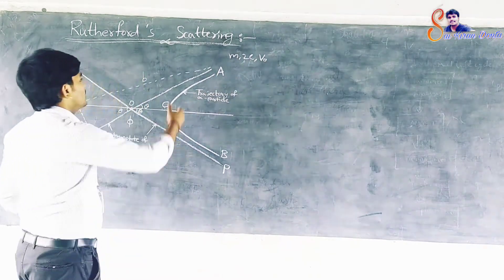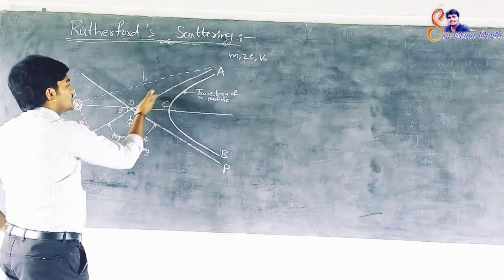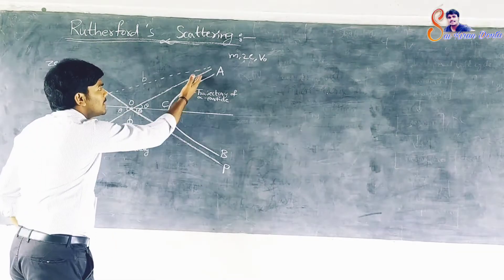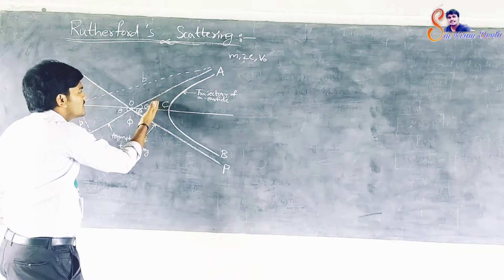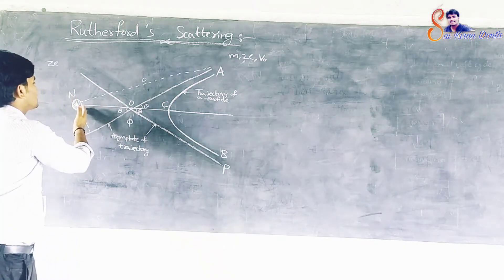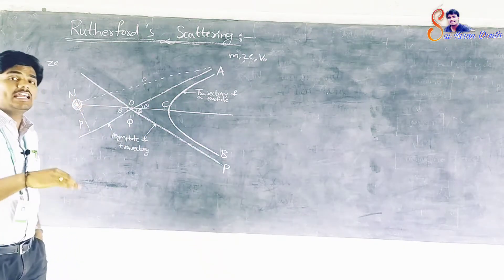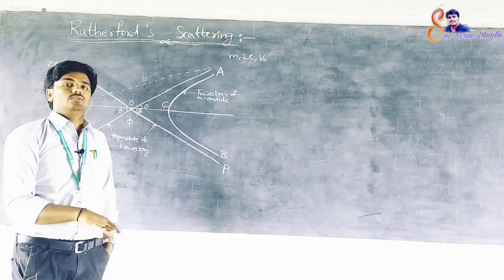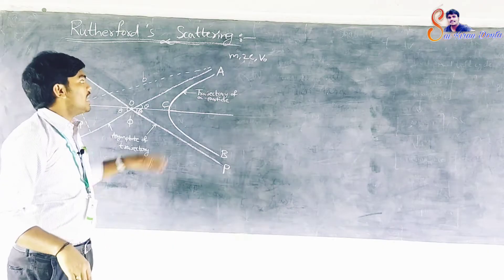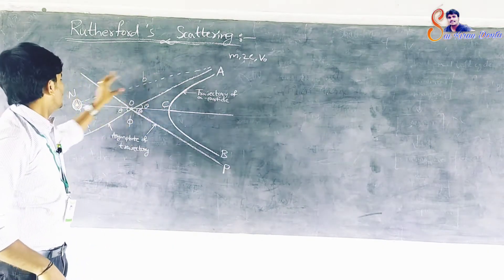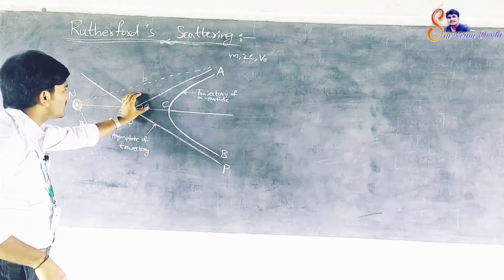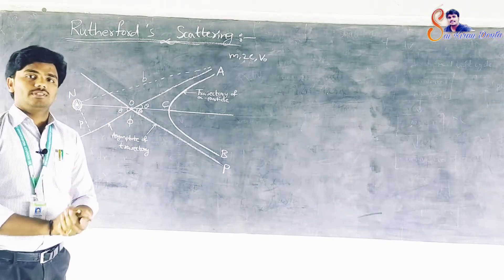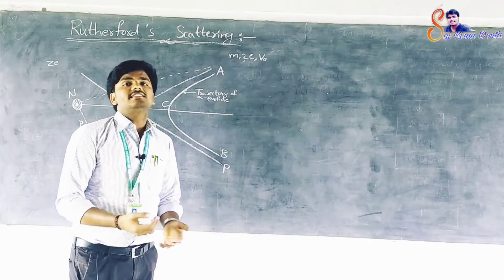As the alpha particle moves, it comes closer to the nucleus N and experiences a repulsive force. The alpha particle moves towards the nucleus and due to this repulsive force, it is repelled away.